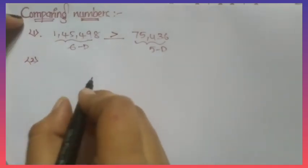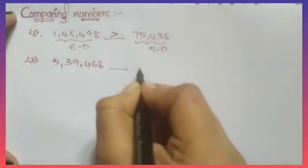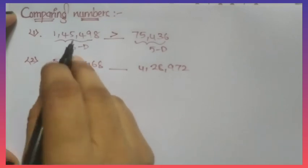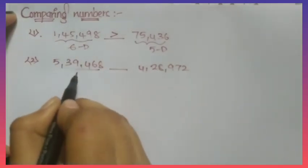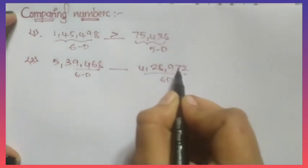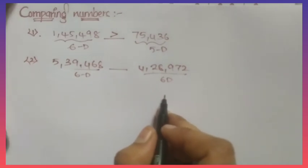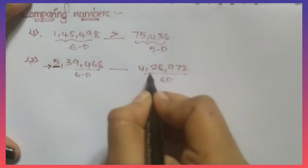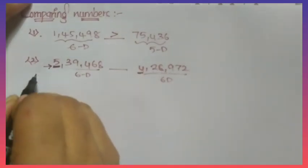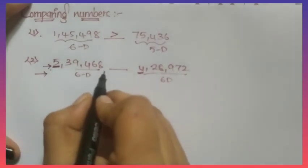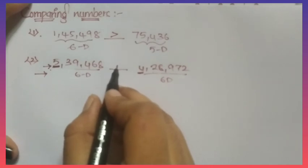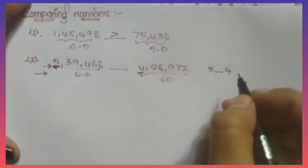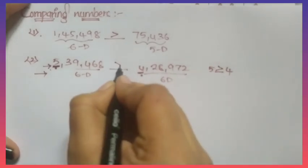Example 2: 5,39,468 and 4,28,972. Look here — this is a 6-digit number and this is also a 6-digit number. Both have the same number of digits. If both have the same number of digits, then we compare from the lakhs place, moving left to right. The lakhs digit here is 5, and here it is 4. Between 5 and 4, which is greater? 5. So 5 is greater than 4, and we place the greater-than symbol here.